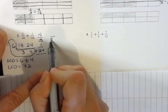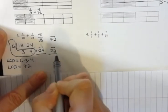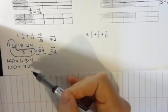What I want to do is rewrite my fractions to have 72's in the denominator, because that's the common denominator that I found.